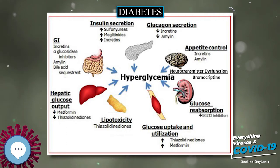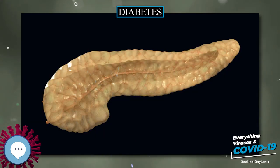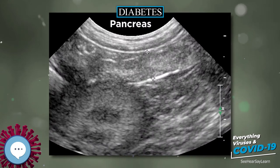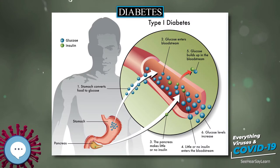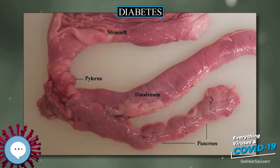Other symptoms of diabetes include weight loss and tiredness. Several other signs and symptoms can mark the onset of diabetes, although they are not specific to the disease. In addition to the known ones, they include blurred vision, headache, fatigue, slow healing of cuts, and itchy skin. Prolonged high blood glucose can cause glucose absorption in the lens of the eye, which leads to changes in its shape, resulting in vision changes.